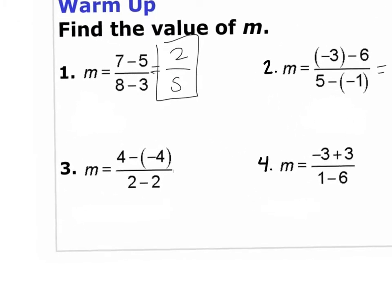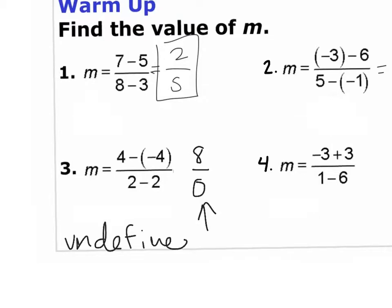Let's look at number 3. 8 over 0, which is undefined. We can't have a 0 on the denominator. So this is undefined.